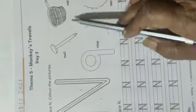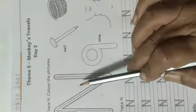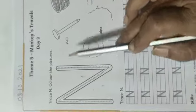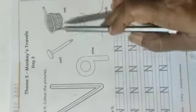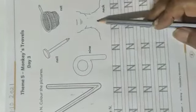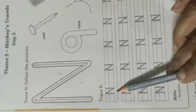Look here. These are pictures related to letter N. The sound of letter N is N. Nail, net, nine and neck. And now we will trace here.